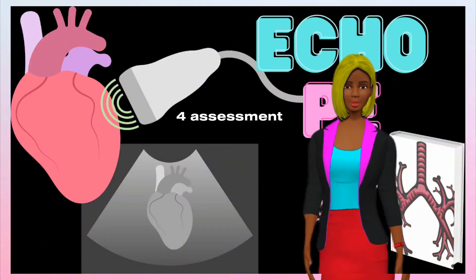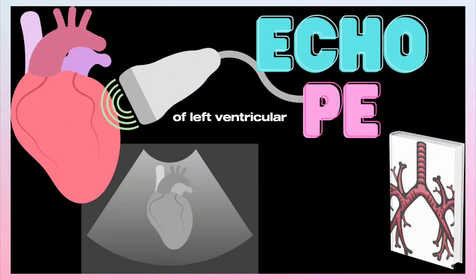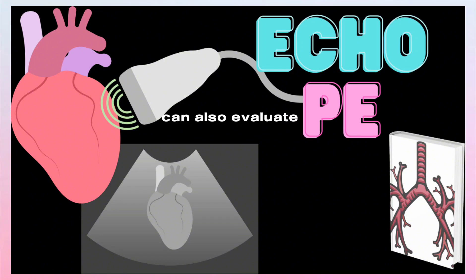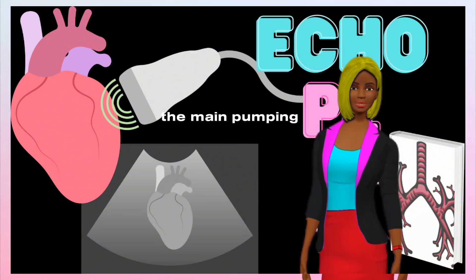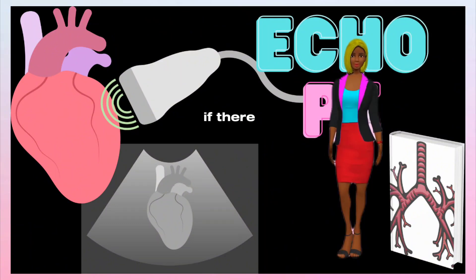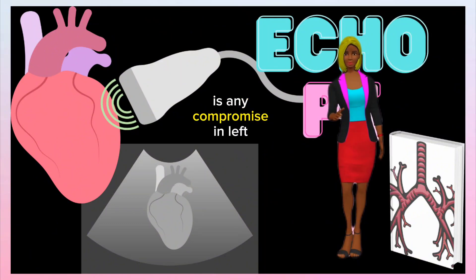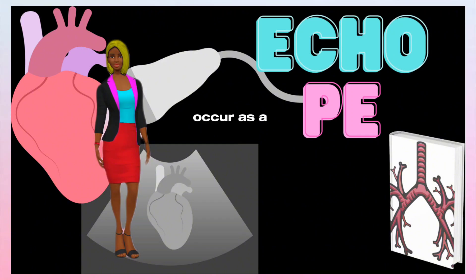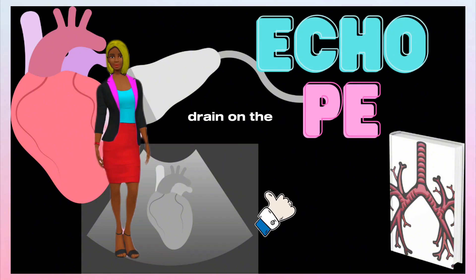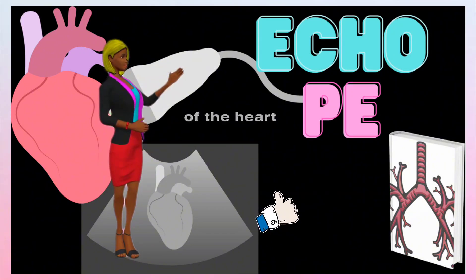4. Assessment of Left Ventricular Function. Echocardiography can also evaluate the function of the left ventricle, the main pumping chamber of the heart. It helps determine if there is any compromise in left ventricular function, which may occur as a result of the increased strain on the right side of the heart.